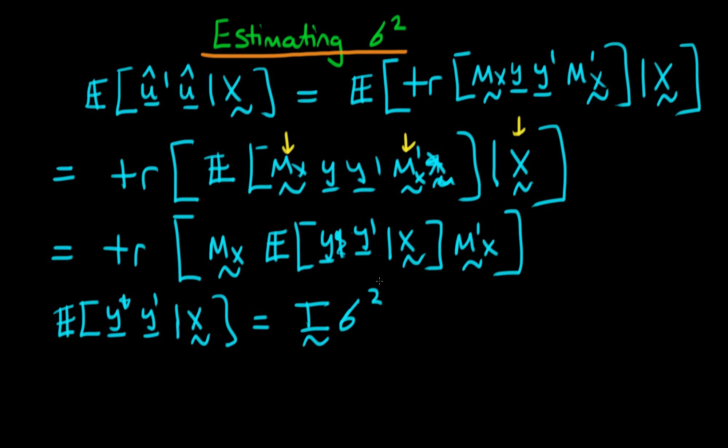So we can operate on our expression a little bit further. That means we're left with the trace of mx times mx primed, and then multiplying by the identity matrix, so the only thing we're left with is sigma squared.